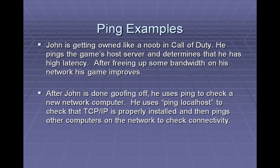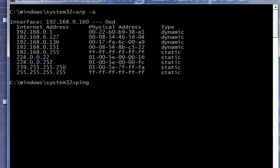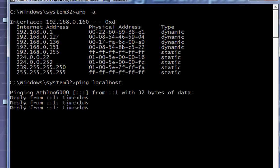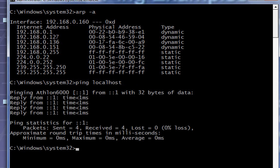There are some real-world uses for ping. Let's say John is playing a video game and he's getting owned in Call of Duty. He looks at the ping numbers on the server and it's like 295 — there's way too much latency. He's actually playing well, he just has so much lag that the server can't transfer his game properly. So he's able to free up some bandwidth and his game improves. After that, he does what a lot of people do as a first step to troubleshooting a network problem: he pings localhost. How that works is you type ping localhost, which is the NetBIOS name that automatically routes you to the network card in your own computer. If you ping localhost and it answers, you know it's not a physical problem and you can move on to the software side.